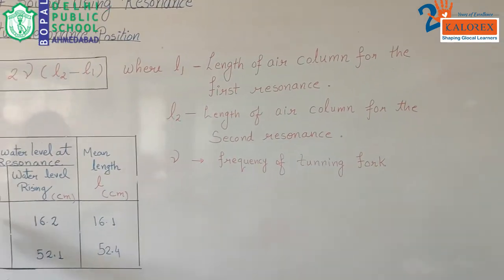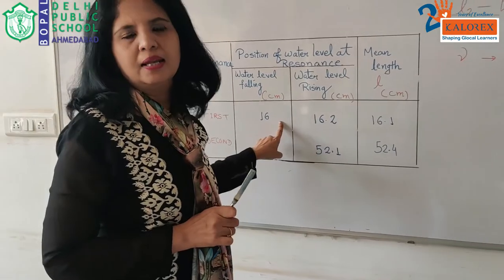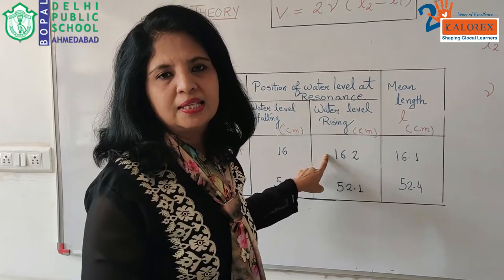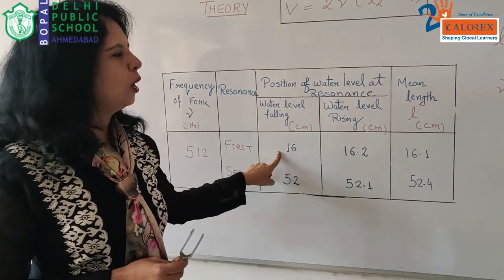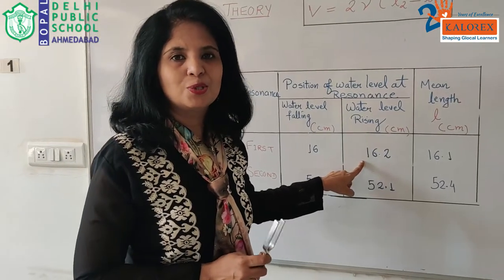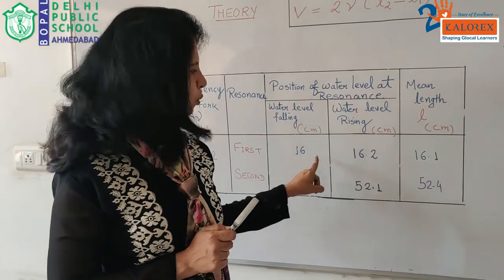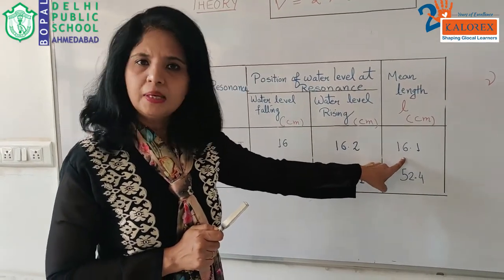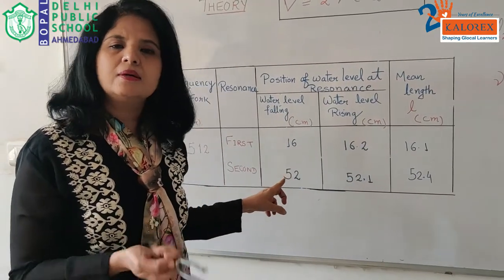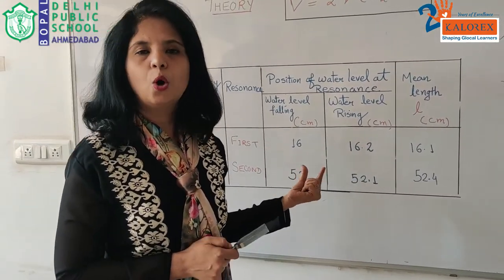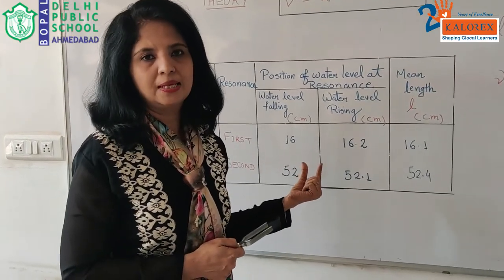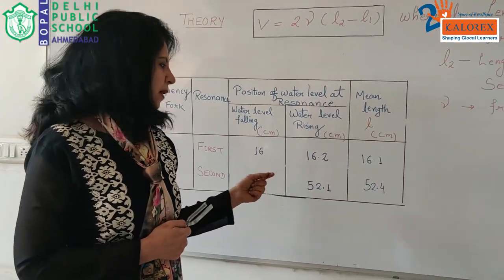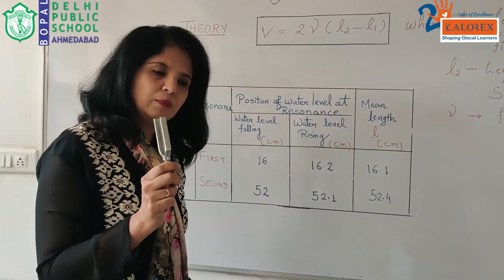L1 is noted down twice by changing the water level — falling and rising. We can change the water level in the resonance tube in two ways: either it falls or it rises. But the first resonance position will always occur at the same position, so we verify our reading using both methods and then take the mean value. Next, we change the water level to approximately three times the value of the first resonance length — as known from theoretical studies — and then adjust to find the second resonance position.